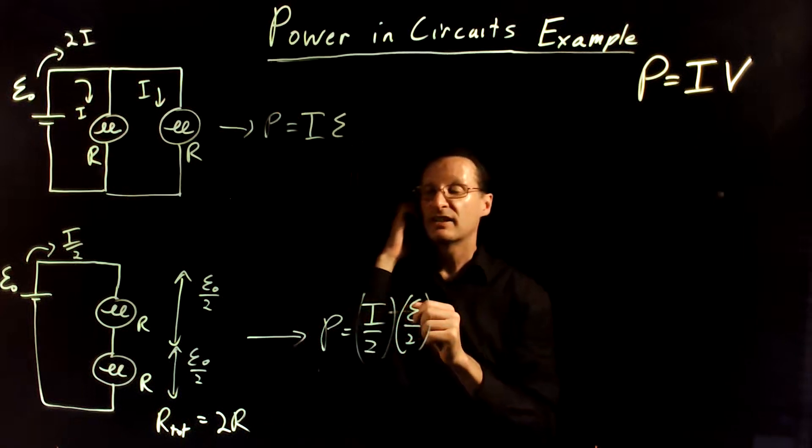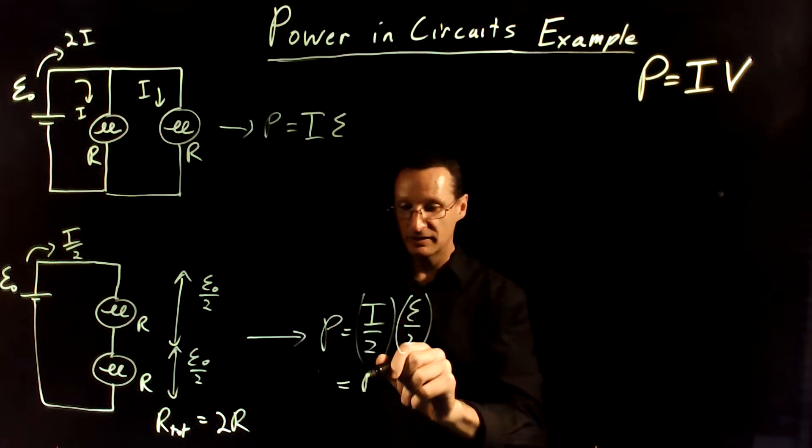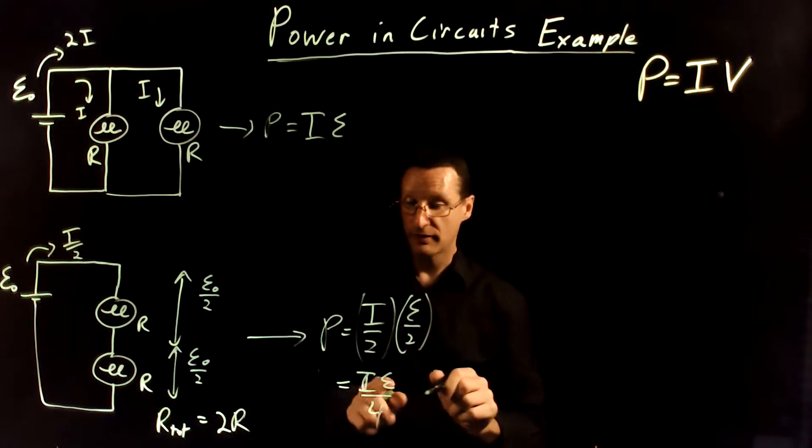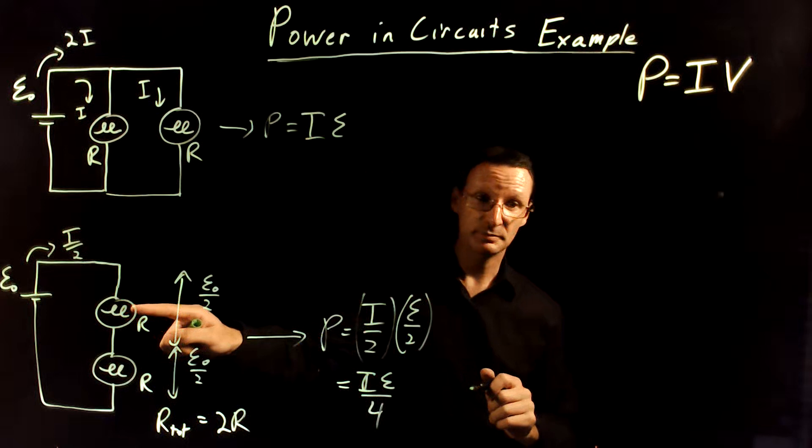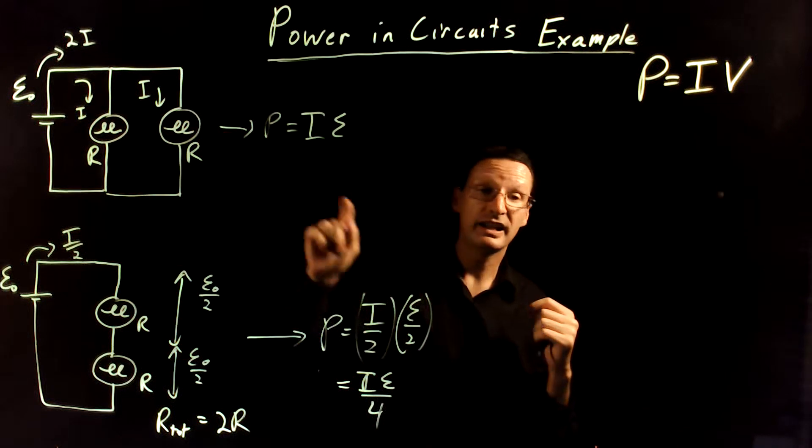So, that's the voltage of the battery. And so, you can see that this power is going to be one-fourth of the power of this one. So, these are going to be four times less bright, or they're going to dissipate one-fourth of the power as either of these.